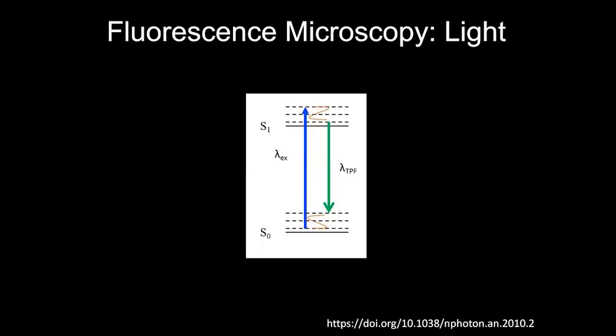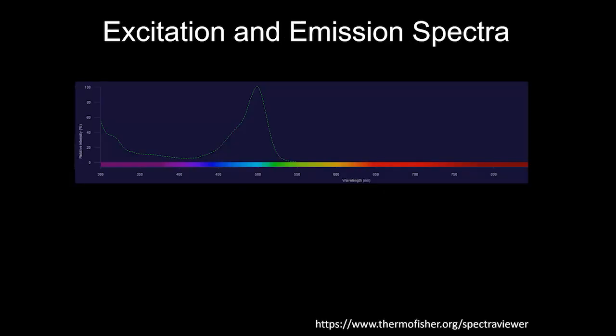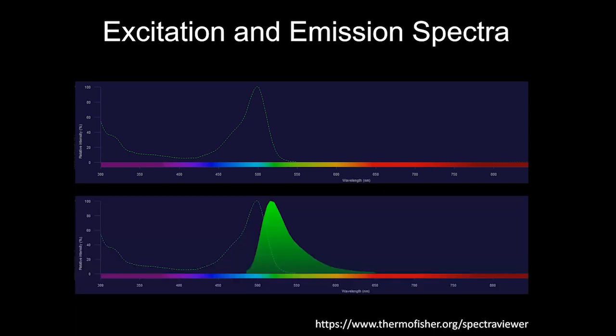All of that is summarized in Jablonski diagrams: excitation at one wavelength, a little energy is lost, and emission at another. Importantly, excitation and emission aren't just one wavelength — they're a spectrum. For example, with Alexa 488 you can excite it down at around 325 nanometers and again around 488–500 nanometers, with varying percent efficiency. And the emission is also a spectrum, not just one band.